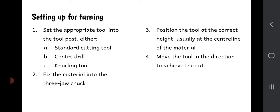The setup for turning on the centre lathe is as follows. Number one, set the appropriate tool into the tool post - either the standard cutting tool, a centre drill, or a knurling tool. Fix the material into the three jaw chuck of the centre lathe. Then position the tool at the correct height, usually at the centre line of the material, and move the tool in the direction to achieve the cut. The tool is mechanically controlled, so in effect you're spinning little wheels and adjusting buttons and levers to do the cutting. Remember your safety: coolant must be on, wear appropriate safety gear, guards must be down in the machine, face masks, eye goggles, aprons, know the location of the emergency stop button, and inspect the machine for any damage before using it.